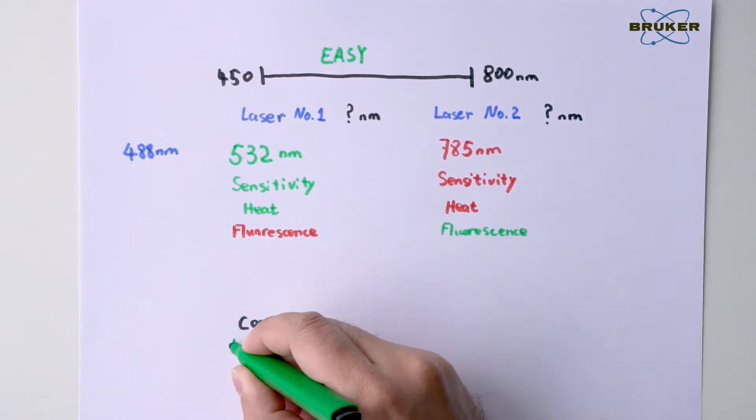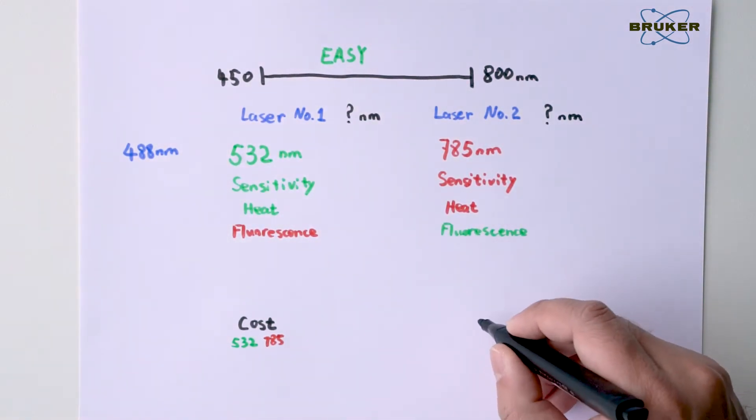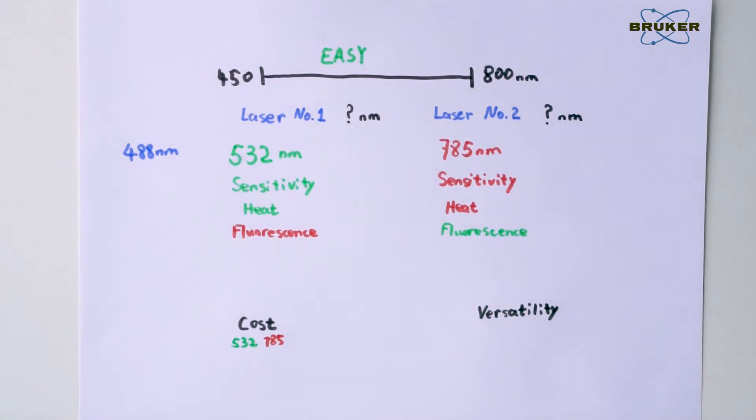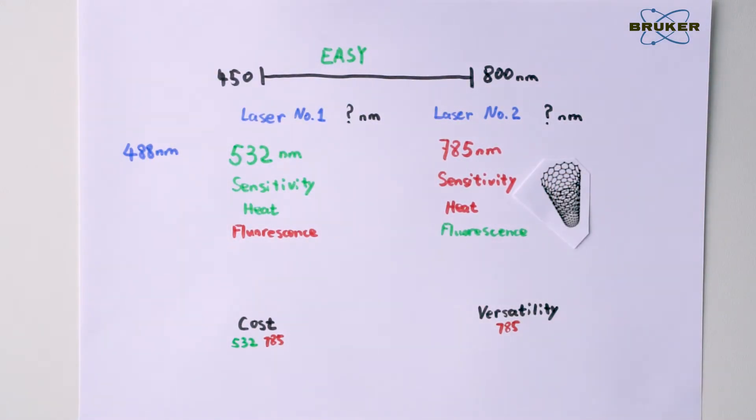Of course, carbon nanotubes can still be investigated by a near-infrared laser, but you will have to turn down the laser power and extend the measurement time. For organic and colored samples, however, a 785 nm laser offers a much more balanced performance with less fluorescence.